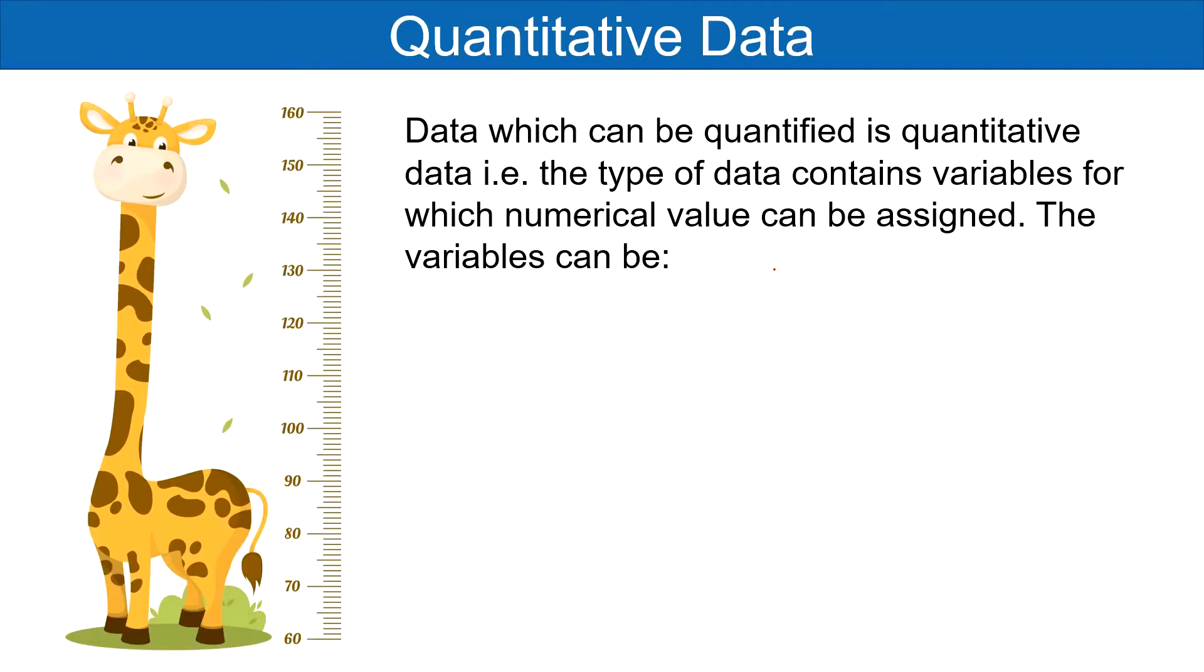Talking about quantitative data: Data which can be counted or measured, in short quantified, is called quantitative data. The type of data which contains variables for which numerical value can be assigned is called quantitative data.